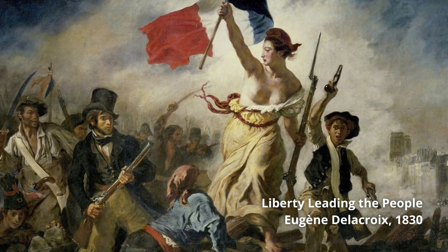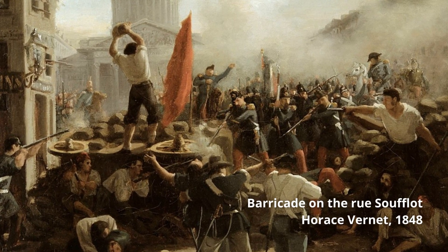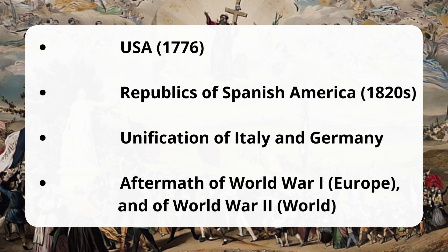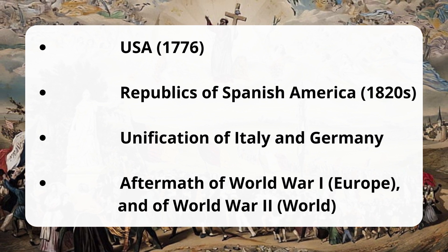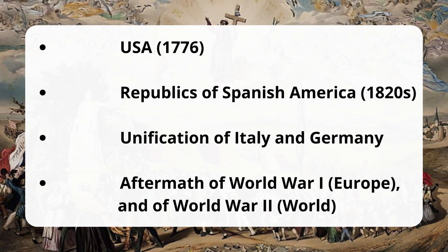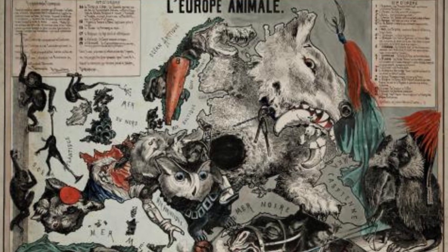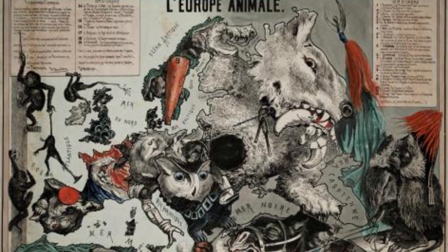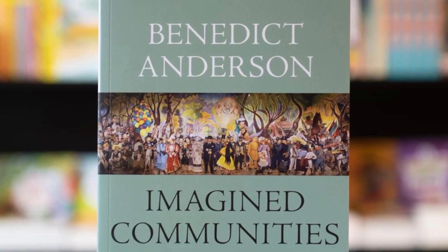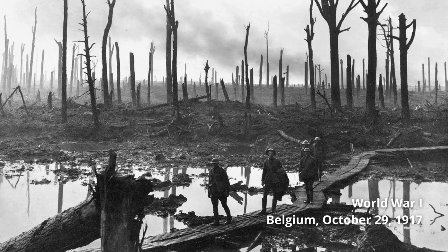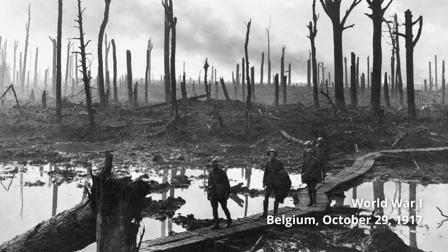In addition to the events already mentioned, it is necessary to note the independence of the USA and the republics of Spanish America, then followed by the unification of Italy and Germany in the mid-19th century, and the aftermath of World War I, when many new European nations emerged, and World War II, when many nations emerged all over the world. Many scholars, such as Benedict Anderson in his famous book Imagined Communities, view nations as socially constructed and historically contingent. Nationalism and its extreme forms have led humanity to the greatest conflicts in its history.